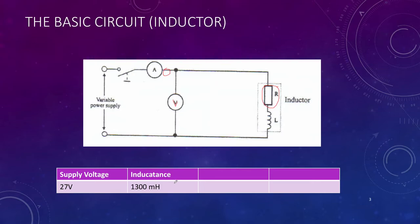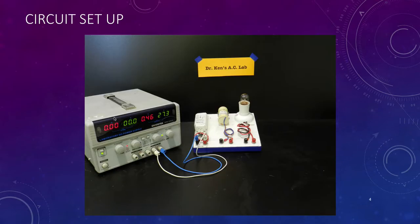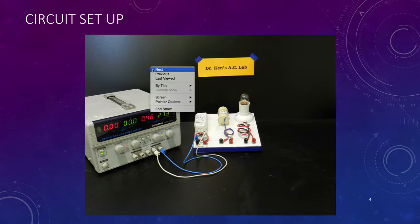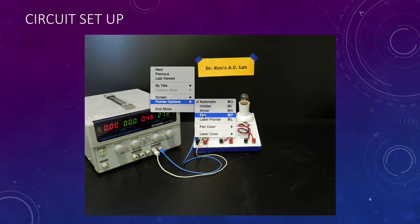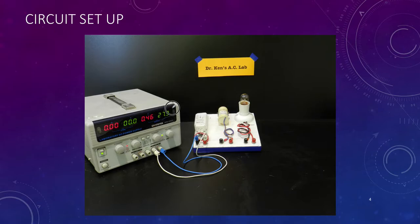The inductor I'm using is 1,300 millihenries and the power supply is around 27 volts. Here's the basic setup—a DC power supply connected to my inductor. To do the measurements, I'm going to use the built-in metering in this power supply. It displays the volts here and the current here.